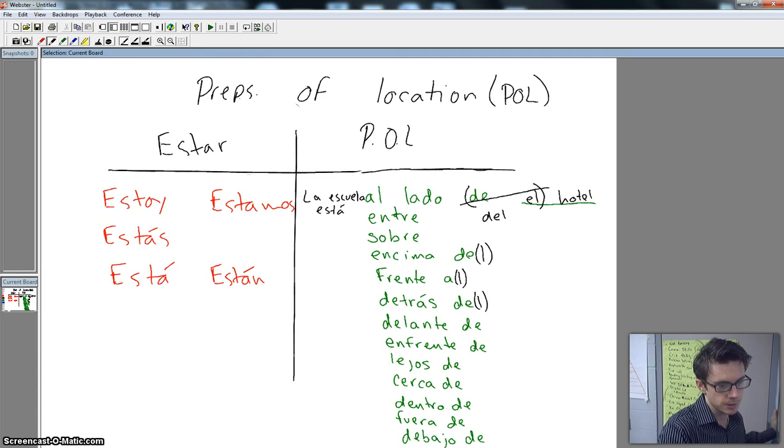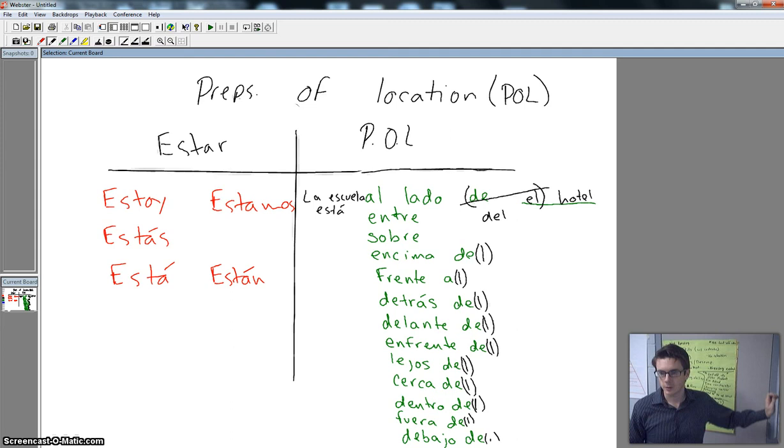So go ahead and do this in your notes. Make all of these the possible contraction del. Go ahead and make all of those possible contraction of del or al for frente a. Alright, now I'm going to go ahead and erase, and please continue jotting these down and making that in your notes.